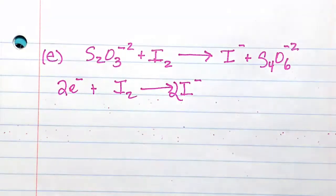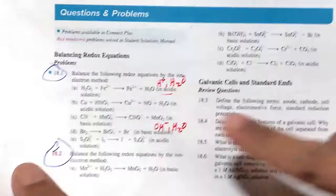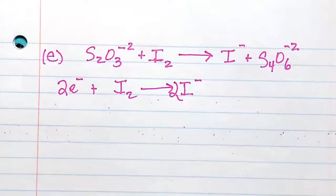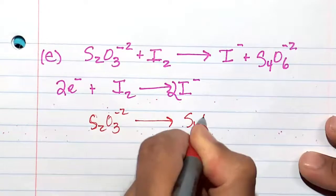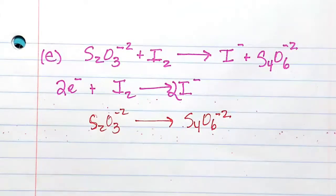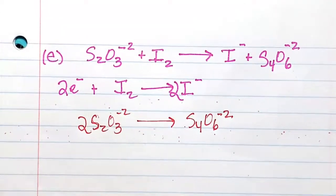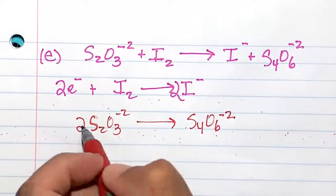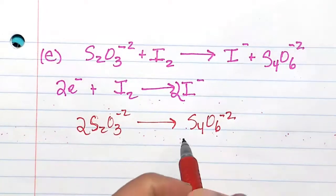This is an acidic solution, remember, that's what the problem tells us. And so now we have S2O3^-2 to S4O6^-2. Let's go ahead and balance the sulfurs here. 2 times 2 sulfur is 4 sulfurs, and 2 times 3 is 6 oxygens.